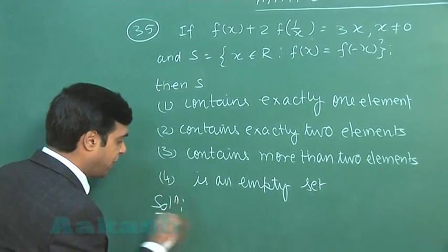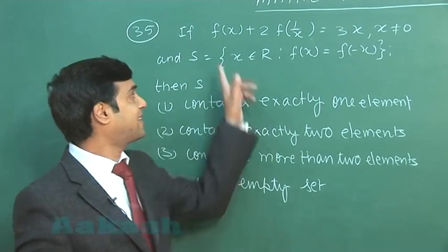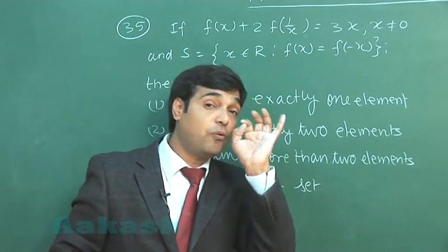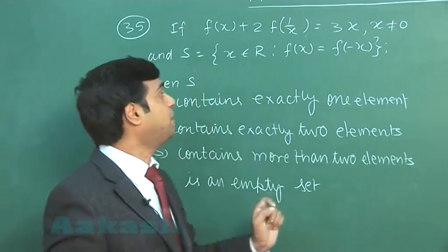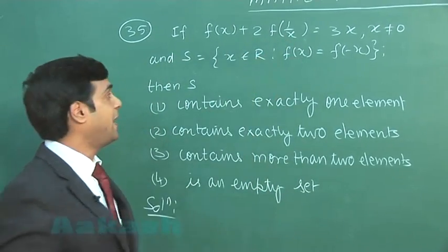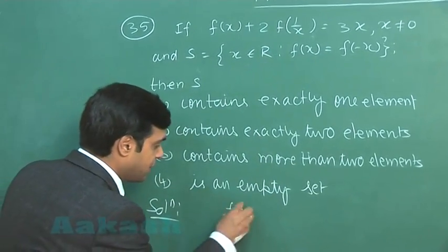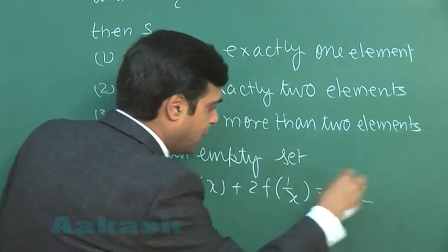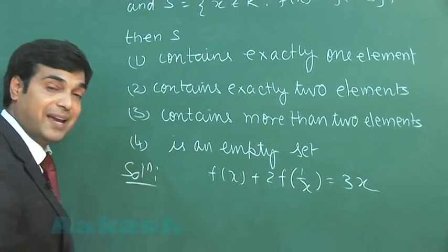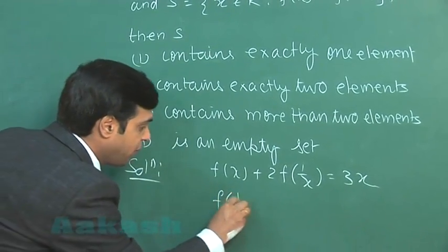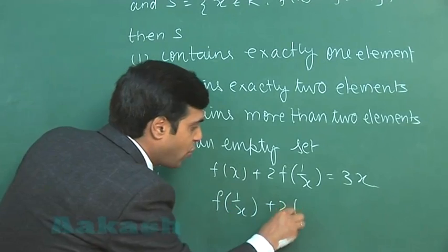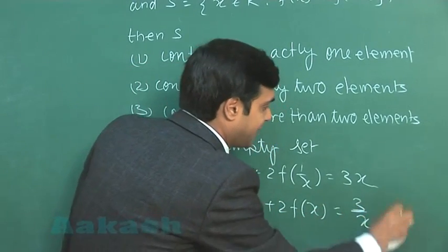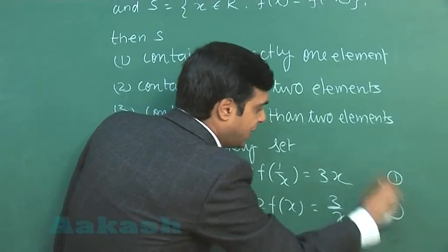So, first we need to find the function. A functional equation is given, the simple one involving x and 1/x, and how do we start this question? We simply replace x by 1/x. This gives us the first equation. Let us write as it is. Now, replace x with 1/x in this one to get f(1/x) + 2f(x) = 3/x. Let us say equation 1 and equation 2.